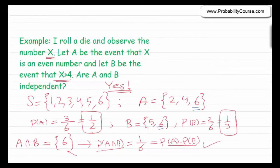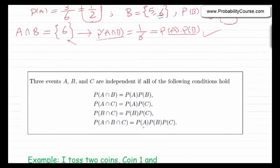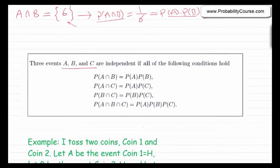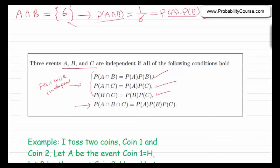We can extend the concept of independence to three or more events. If I have three events A, B, and C, we say they are independent if all of these conditions hold: A and B are independent, A and C are independent, B and C are independent, and also the probability of A and B and C equals the probability of A times probability of B times probability of C. You might think that the three pairwise conditions are sufficient, but that is not the case — you can have examples where events are pairwise independent but not mutually independent.